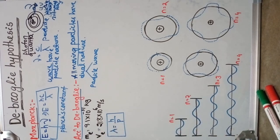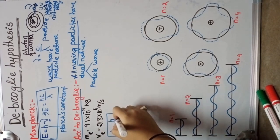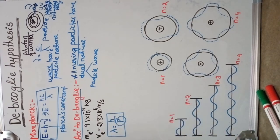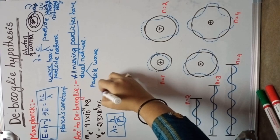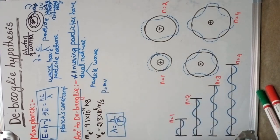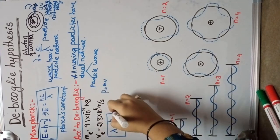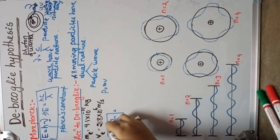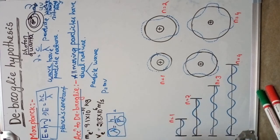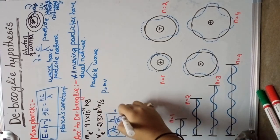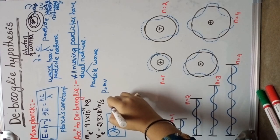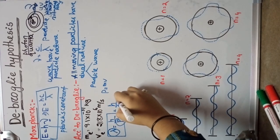The de Broglie wavelength depends on the momentum of the particle, which means it depends on the mass and velocity of the particle. We know that momentum p equals to mv. So lambda equals to h by mv. Here lambda is called the de Broglie wavelength of that moving particle. Lambda equals to h by p or h by mv.